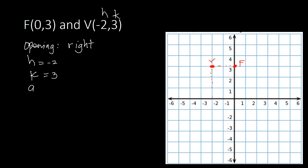In the standard equation of the parabola, we need the coordinates of the vertex and also the value a. To find a, we count the number of units from the vertex to the focus — that's 1, 2 — so a equals 2.